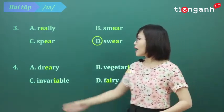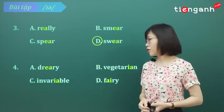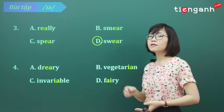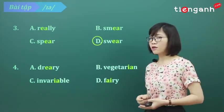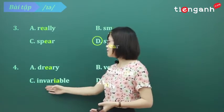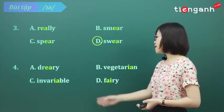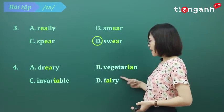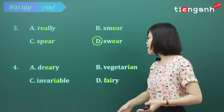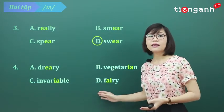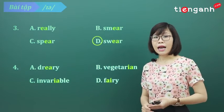Chúng ta thấy rằng A phát âm là 'dreary' — 'ear'. B là từ 'vegetarian' — cũng 'ear'. Và từ C 'invariable' cũng là 'ear'. Chỉ riêng D — từ 'very' — phát âm là 'air'. Vậy thì 'very' chính là từ phát âm khác và đáp án là D.